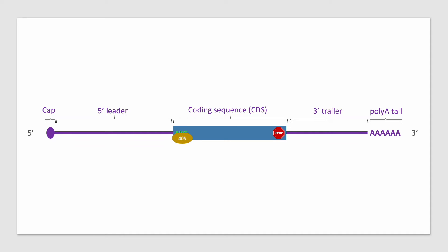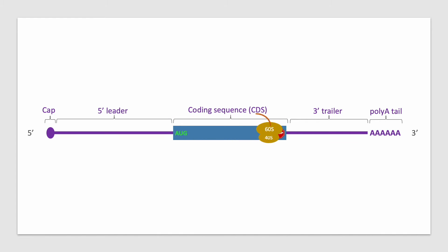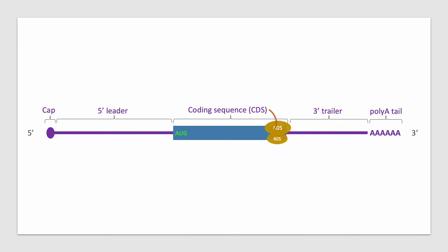This codon is a signal to begin translating the mRNA into a protein. The large ribosomal subunit, 60S, joins in with the small subunit and together they begin translating the gene's coding region, often termed the open reading frame. The ribosome reads the mRNA sequence one codon at a time, synthesizing the protein until it reaches one out of three stop codons. The stop codon signifies the end of translation and the ribosome disengages from the mRNA.